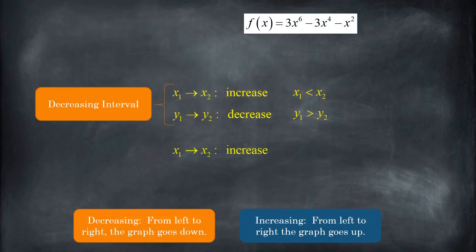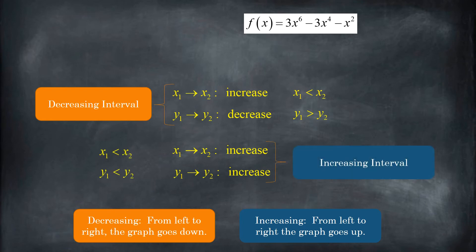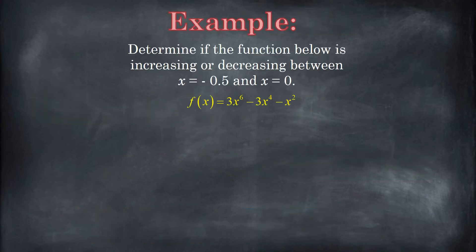What an increasing interval is going to look like is: x will increase and y will increase. So if as x goes up, y also goes up, then your interval is increasing. Let's see an example. We're going to talk about the function 3x to the sixth minus 3x to the fourth minus x squared, and over the interval from x equals negative one-half to zero, we're going to determine if this function is increasing or decreasing.